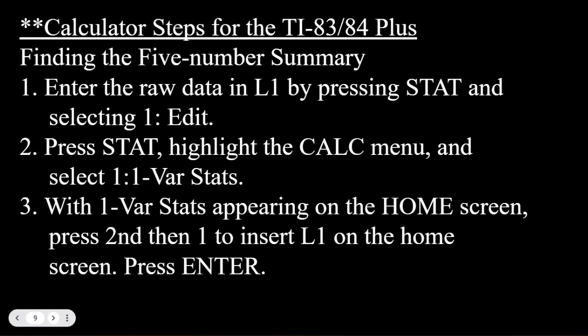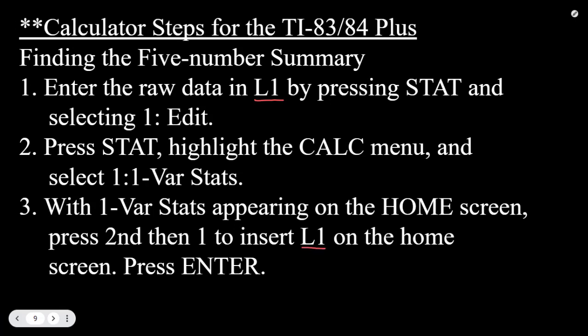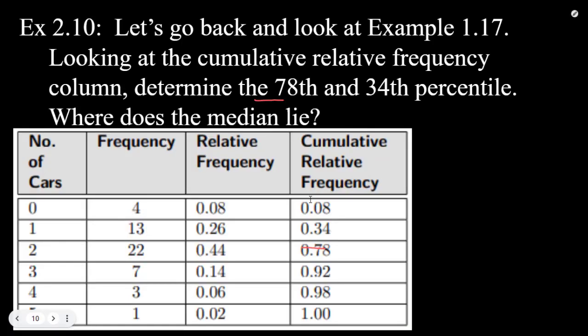Steps on the graphing calculator: enter the raw data in the L1 list by pressing STAT and selecting number one (Edit). Then press STAT, highlight the CALC menu, and select number one for one-variable statistics. With one-variable stats on the home screen, press SECOND and the one key to input L1, then press ENTER. Scroll down to see the five-number summary.